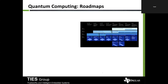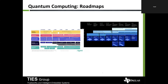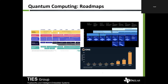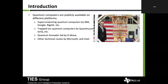Looking at quantum computing roadmaps: IBM developed their roadmap from 2019 to 2026, this is Rigetti's roadmap, and IonQ's roadmap shows a definite plan that by 2028 they will have a thousand-qubit quantum computer. We're seeing that people are taking up challenges and we're going to an era where quantum computing will be mainstream, and we need to prepare ourselves for that.